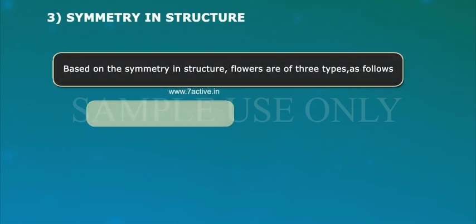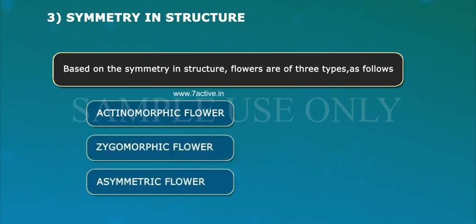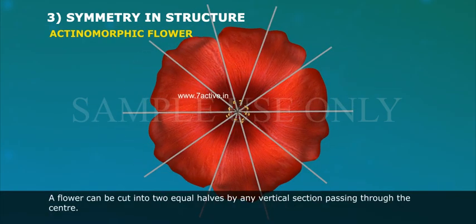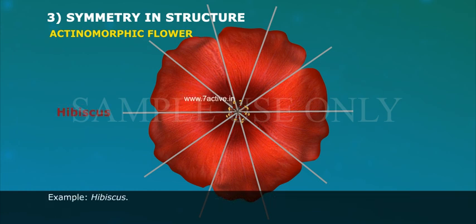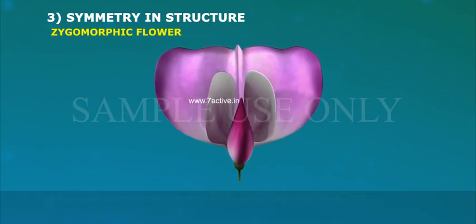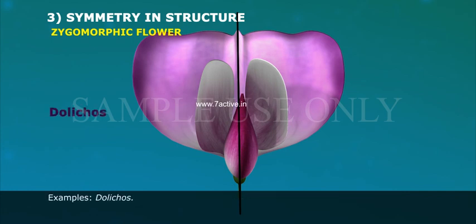Symmetry in structure. Based on the symmetry in structure, flowers are of three types. Actinomorphic flower: a flower can be cut into two equal halves by any vertical section passing through the center. Example: hibiscus. Zygomorphic flower: a flower can be cut into two equal halves by one vertical section only. Examples: dolichos, ocimum.